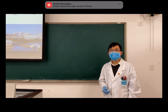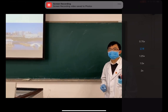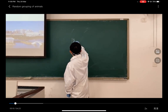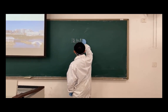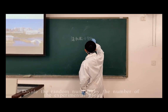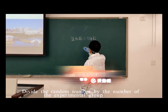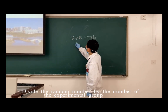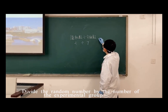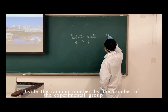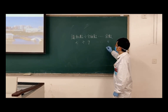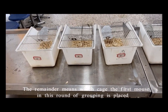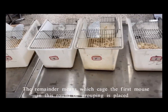Next, let us look at how to use random numbers. Divide the random number by the number of the experimental group. For example, we select the random number 3 and divide it by today's experimental group number 7. The remainder is 3, which means that the first mouse in this round of grouping is placed in the third cage.